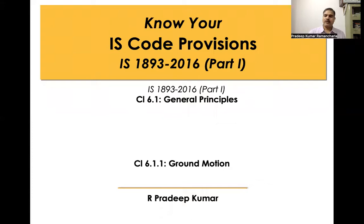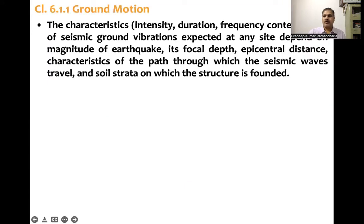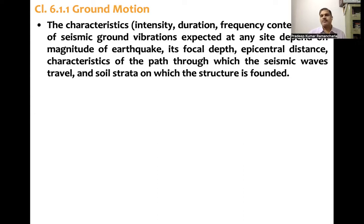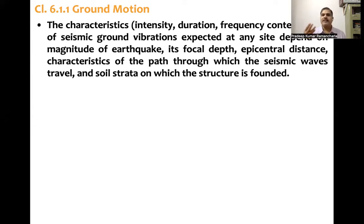Clause number 6.1.1, that is ground motion. The characteristics — that is intensity or amplitude, duration, and frequency content — of seismic ground vibrations expected at any site depend on magnitude of earthquake, its focal depth, epicentral distance, characteristics of the path through which the seismic waves travel, and soil strata on which the structure is founded. In short, the characteristics are amplitude, duration, and frequency content. And the factors affecting these three characteristics are source, path, and site.